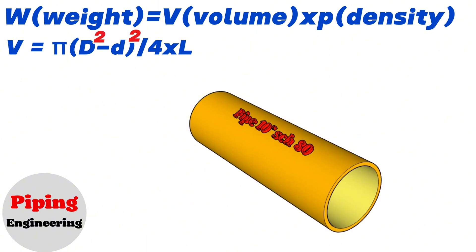This formula applies for all pipe sizes. We will explain the calculations in this video using a 10 inch and a 16 inch pipe example. Let's calculate the weight of a 10 inch pipe with a schedule 80 thickness and a length of 2 meters. To estimate the volume of the pipe piece, let's look at the wall thickness of a 10 inch schedule 80 pipe from the steel pipe dimension chart.